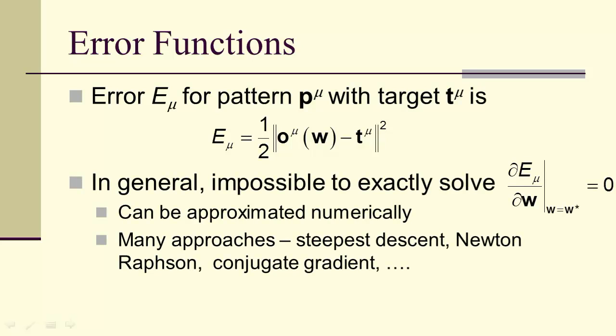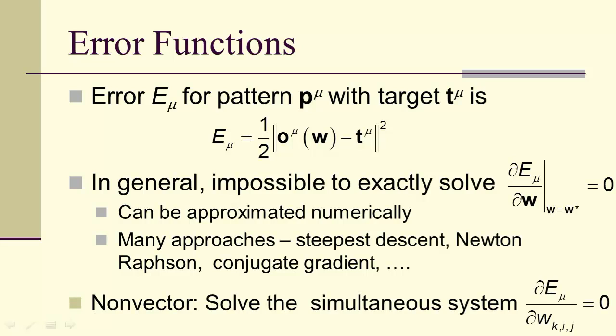Let's notice that in general, it's impossible to actually solve this equation, the partial of E sub mu with respect to W equals zero. But we can approximate it numerically, and there are many approaches, steepest descent, Newton-Raphson conjugate gradient, that we could apply to this problem. Let's notice in a non-vector form, we're taking the derivative with respect to the individual synaptic weights.